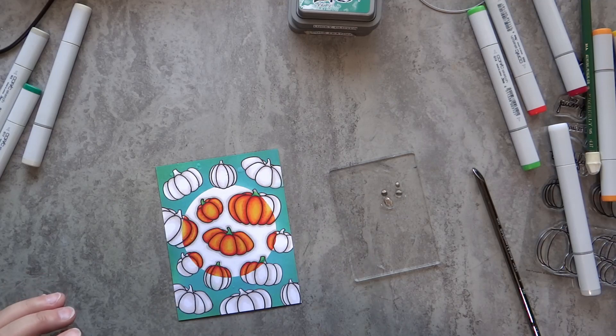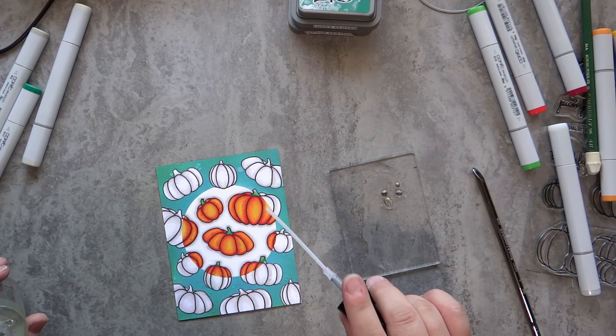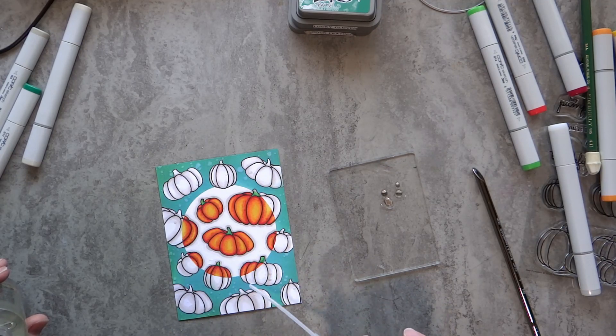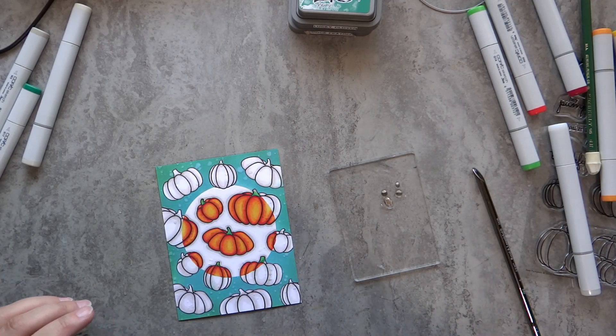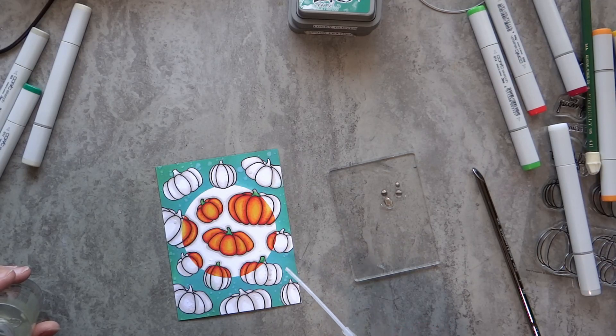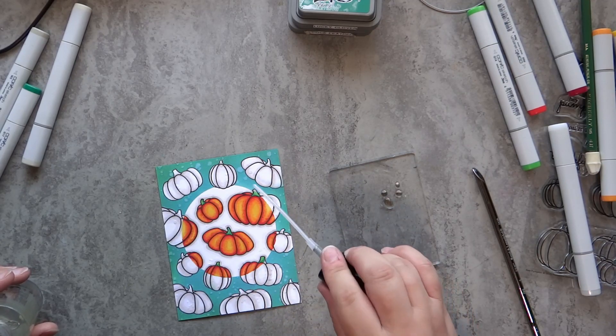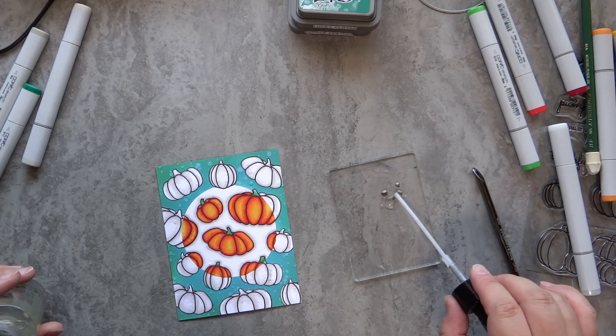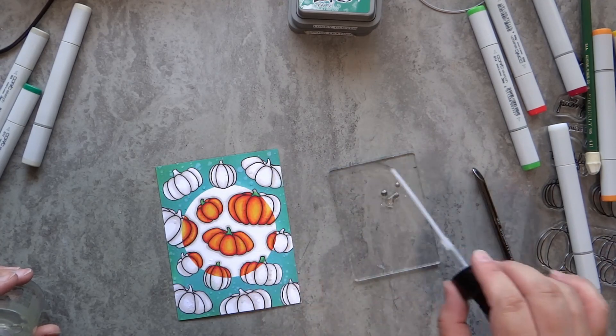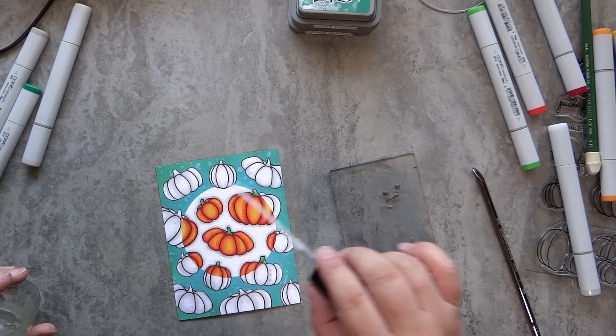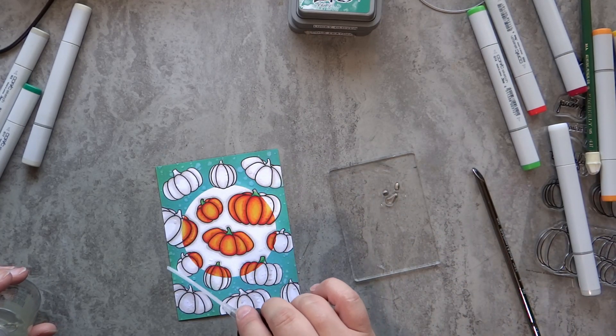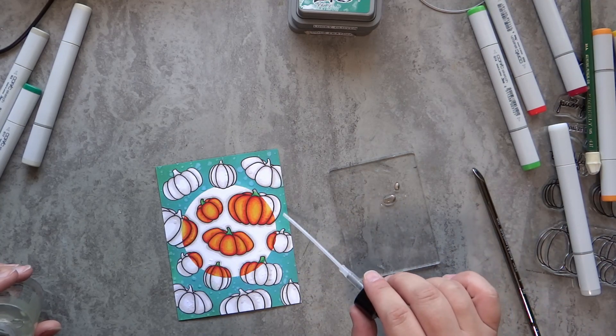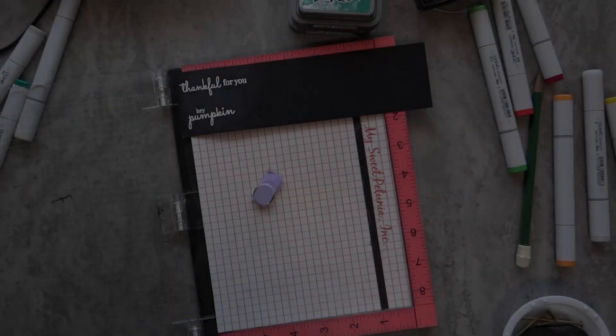Since the Distress Oxide inks react so well with water, I go ahead and tap out some clean water using the straw of a sprayer onto my background. I also spray a small amount of water onto an acrylic block so that I can grab more water from there and tap that onto my ink blending, and I can control where the water droplets go a little bit more. Some of the water does hit areas where there is no ink blending. It will all dry out and you won't be able to see those droplets.